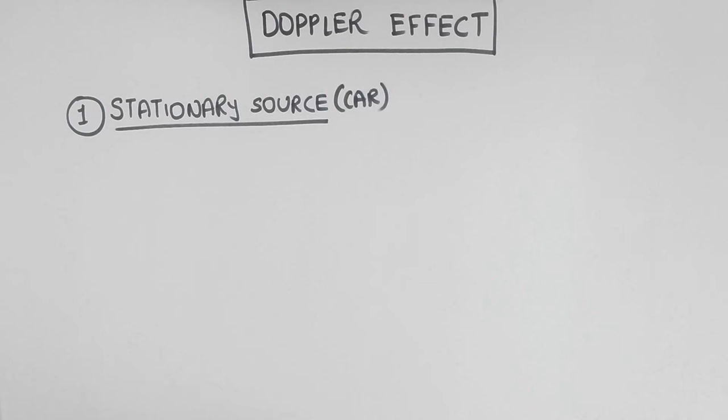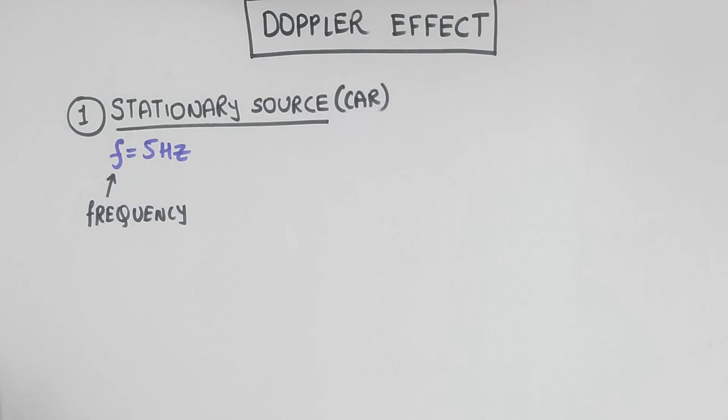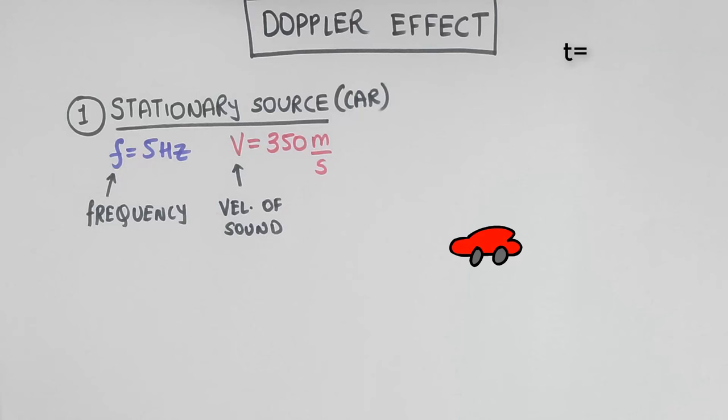Let's consider a stationary source, say a car, which is producing a sound of frequency 5 Hertz. Let's assume the velocity of the sound to be 350 meters per second. Let's look at an animation of this in which our clock starts the moment the car starts producing waves and the clock stops exactly after 1 second.